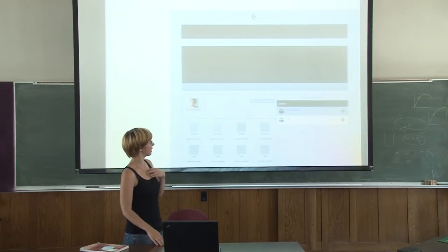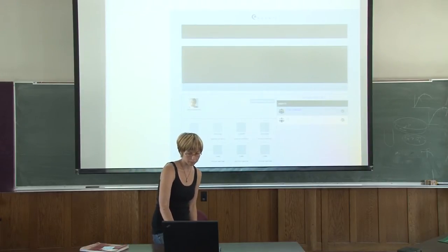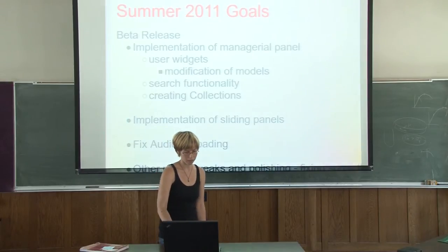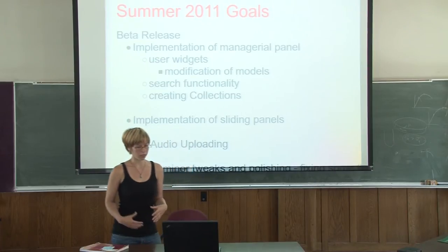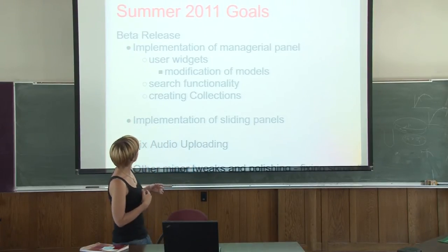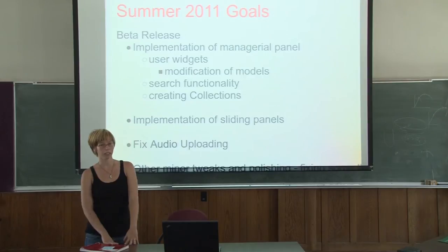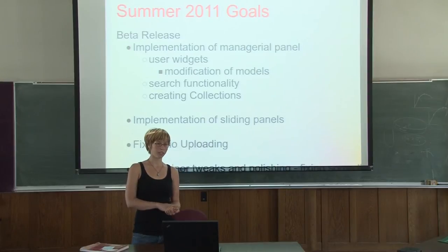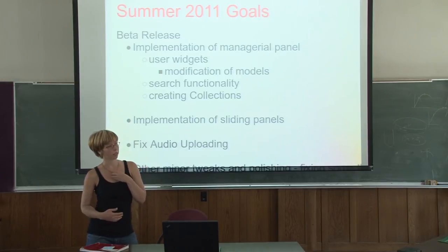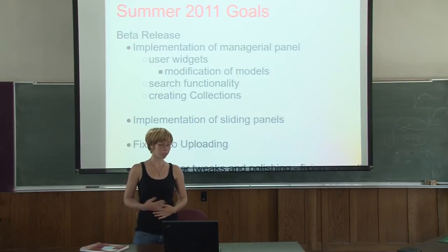The list of users allows the user to delete, leave collections, approve members, and remove members. This is what we've primarily been working on developing over the past month or so, especially how that's going to look. By the end of the summer we hope to have a beta release. Some of the things going into that will be implementation of this managerial panel involving user widgets, modifications to user models, and search functionality.